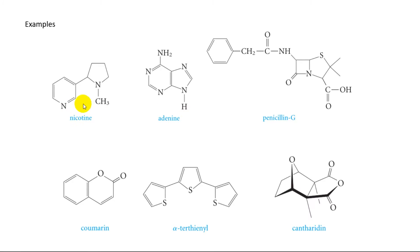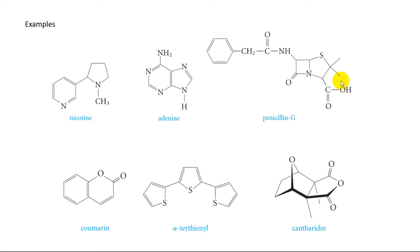Nicotine, present in tobacco, has two heterocyclic rings of different sizes, each containing one nitrogen. Adenine, one of the heterocyclic bases of DNA, contains two fused heterocyclic rings, each containing two heteroatoms — nitrogen. Penicillin, one of the most widely used antibiotics, has two heterocyclic rings, the smaller of which is crucial to biological activity.